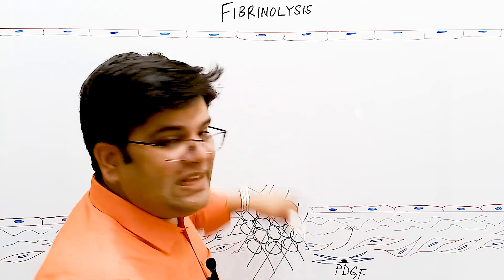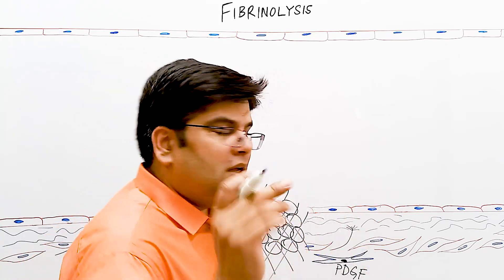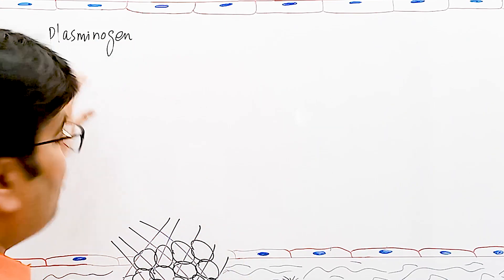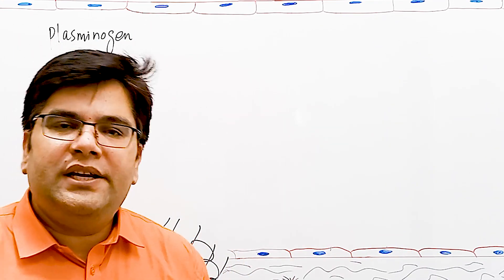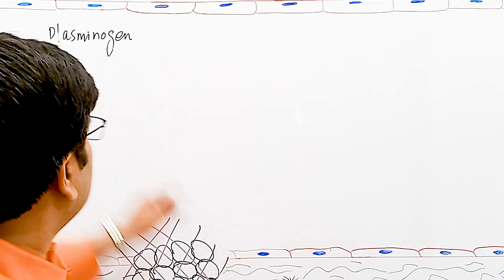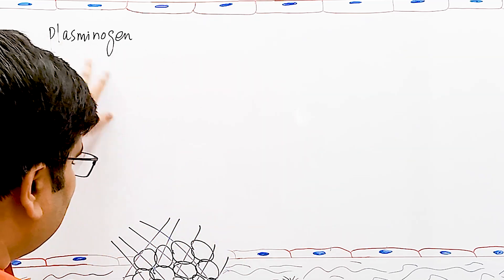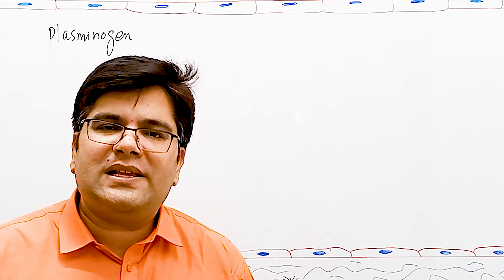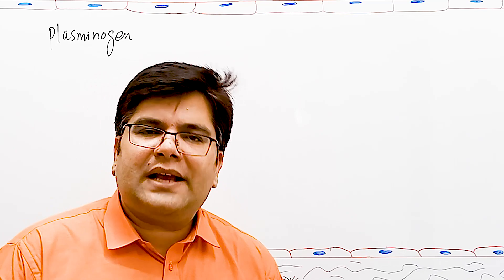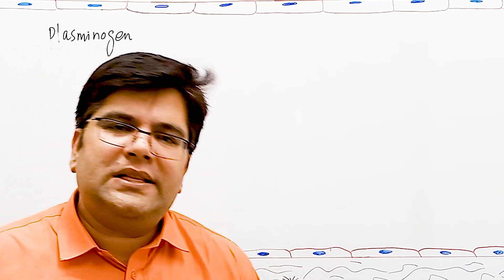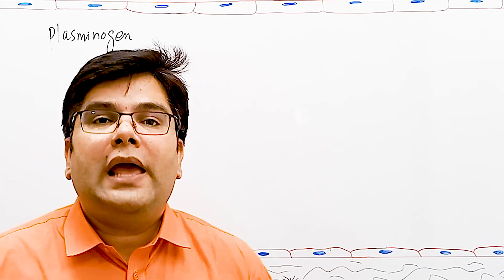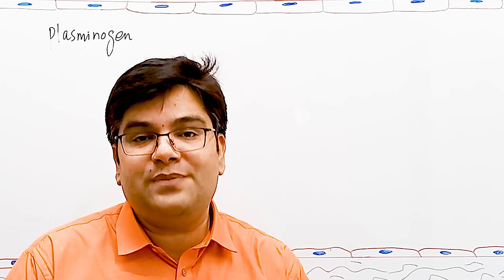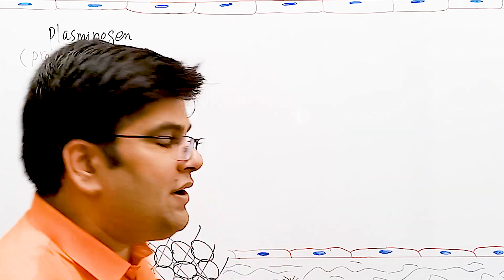That protein is called plasminogen, also called profibrinolysin. It is produced from the liver and is trapped into the clot along with other plasma proteins. This globulin protein, when present in plasma, is in inactive form — so it is a pro-enzyme or zymogen. When activated, its function is just like trypsin in that it causes proteolysis.